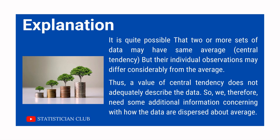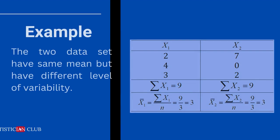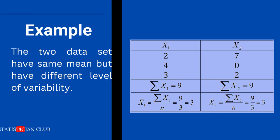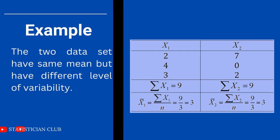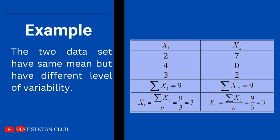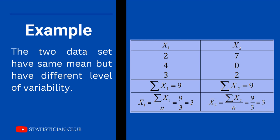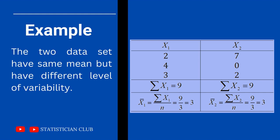Now we understand this with a daily life example. Here are two data sets, x1 and x2. The observations of x1 are 2, 4, 3. When we sum all these observations, the sum of x1 is equal to 9. Taking the average, x̄₁ = sum of x over n = 9 over 3 = 3.